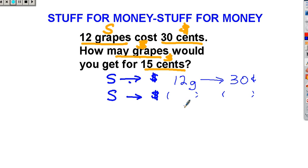And then we're going to do stuff right here. We don't know how much stuff we're going to get. I'm going to make an empty box and I'm going to spend 15 cents on that other set of stuff or grapes in this case.